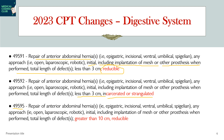Code 49595 is for defects greater than 10 cm, reducible. Comparing 49591 and 49595: 49591 is for less than 3 cm reducible, while 49595 is for greater than 10 cm reducible. Code 49592 is for less than 3 cm but the type is different — that is incarcerated or strangulated.